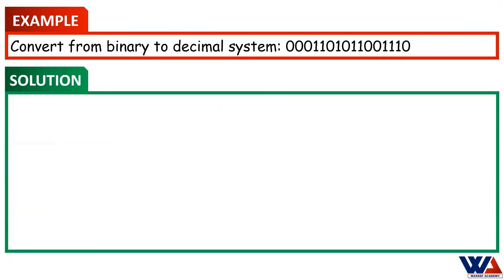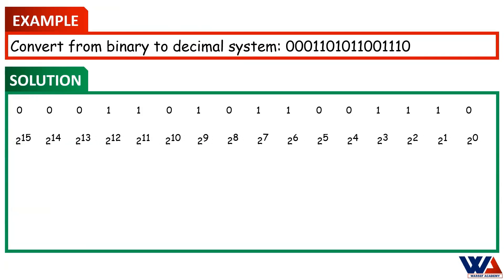Here is another example of a 2-byte binary number. Again, in the first step, write the binary number by separating the binary digits with enough spaces. In the second step, list out the powers of 2 for all the digits starting from the rightmost position.